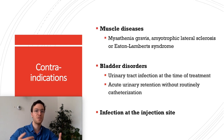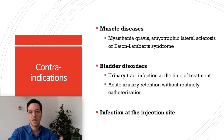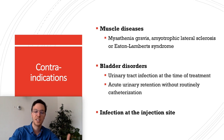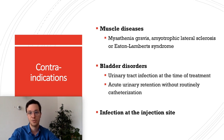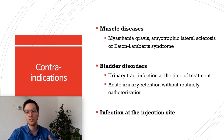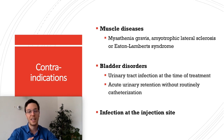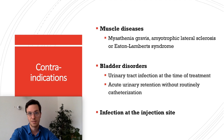There are some contraindications for the use of Botox: muscle diseases like myasthenia gravis or ALS, bladder disorders such as urinary tract infections at the time of treatment or acute urinary retention without routine catheterization, and an infection at the injection site.